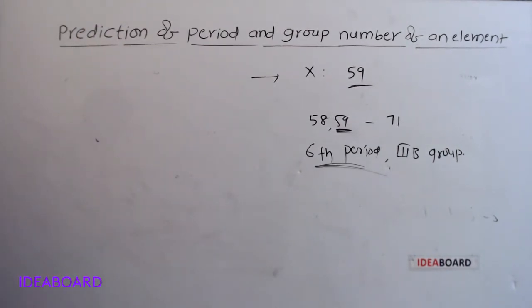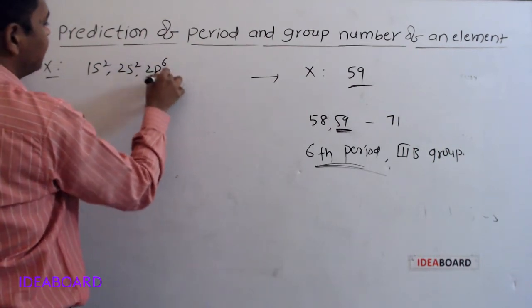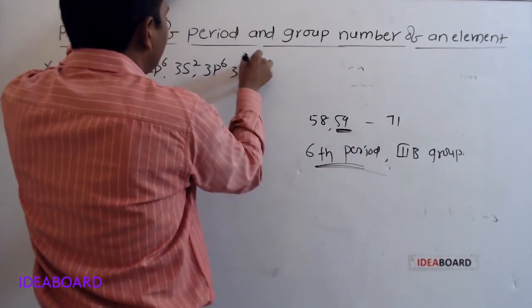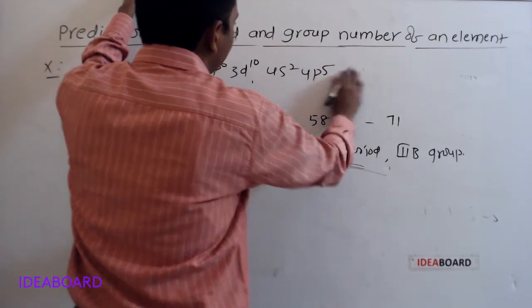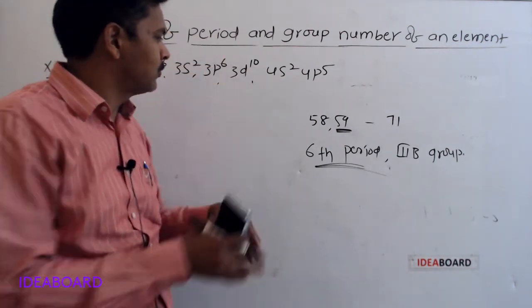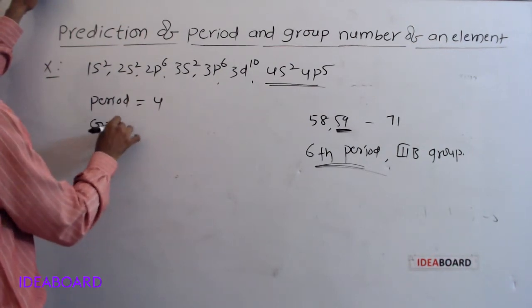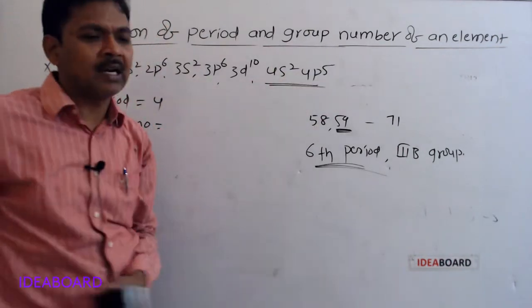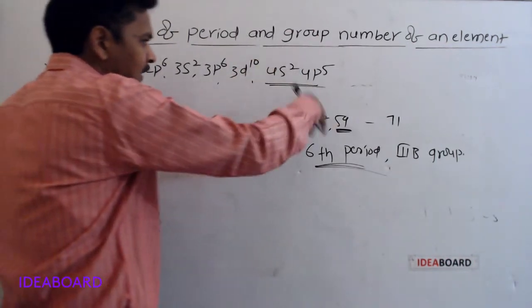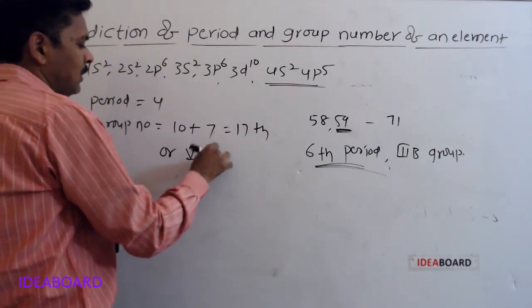Next question: for element X, the electronic configuration is 1s²2s²2p⁶3s²3p⁶3d¹⁰4s²4p⁵. What is its position? The highest principal quantum number is 4, so period number is 4. The valence electrons are 4s²4p⁵, and the element belongs to the p block. For p block elements, group number equals 10 plus number of valence s and p electrons: 10 plus 7 equals 17. So it belongs to the 17th group, also known as the 7A group.